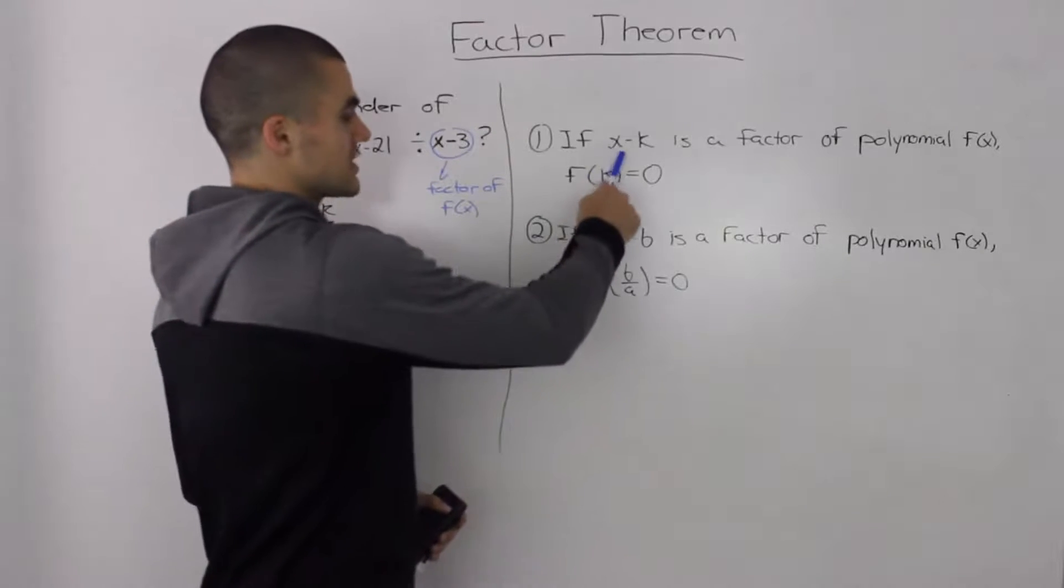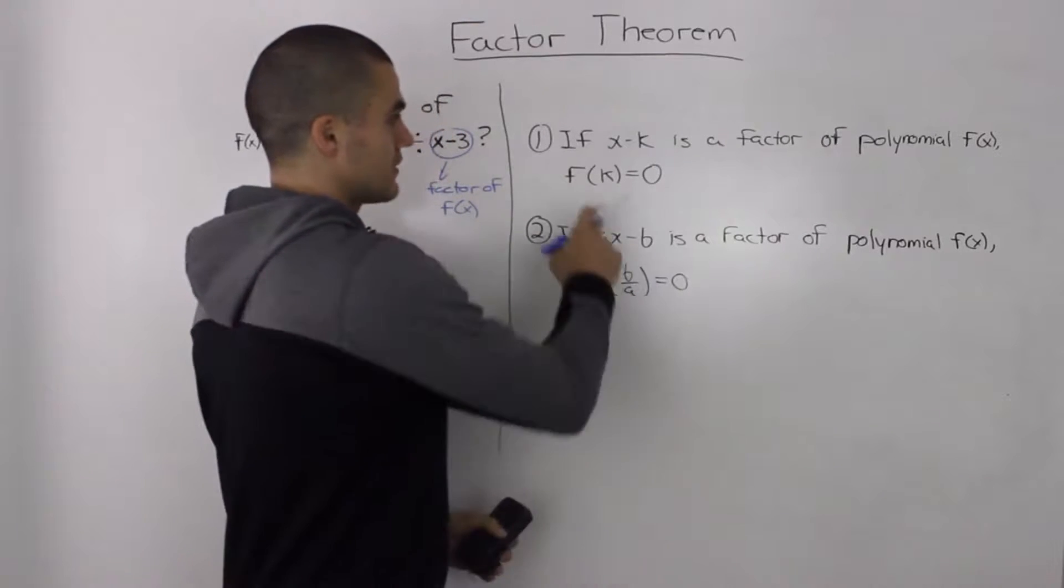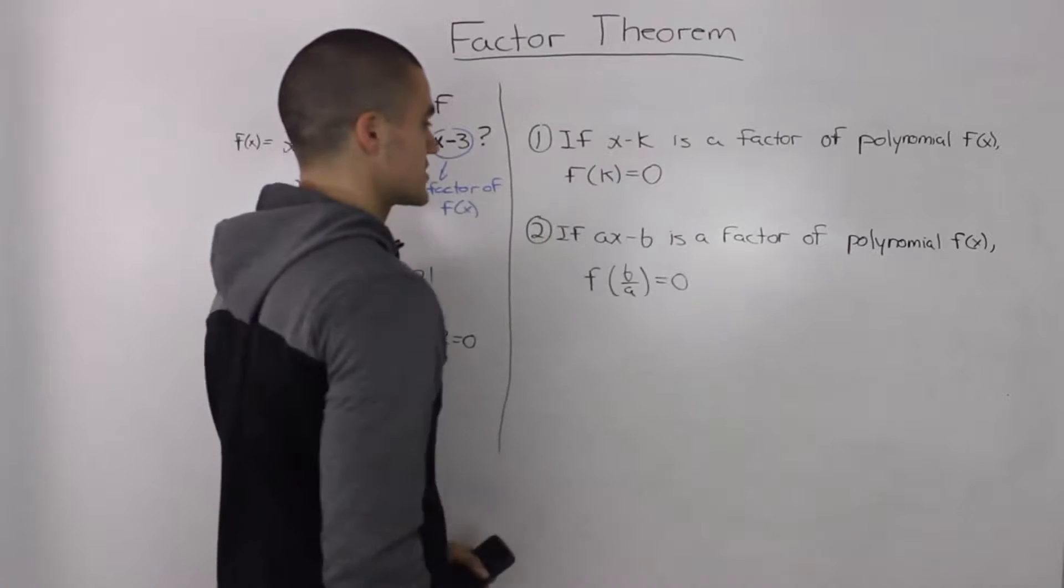If x - k is a factor of polynomial f(x), then f(k) = 0, or the remainder is 0.